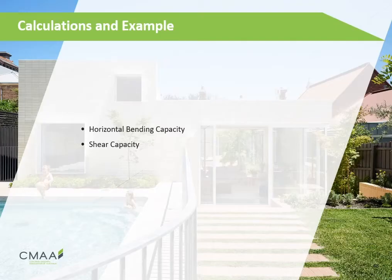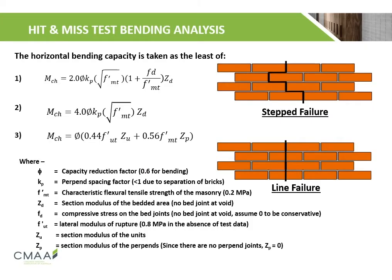In the next few slides we'll be going through an example that runs through the calculation of horizontal bending capacity and shear capacity of hit-and-miss walls. There are two failure types: step failure and line failure. Equations 1 and 2 represent step failure, while equation 3 represents line failure.